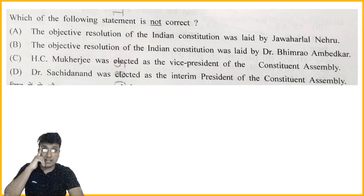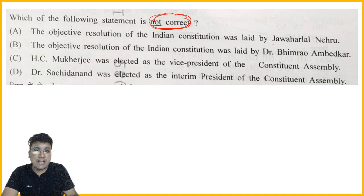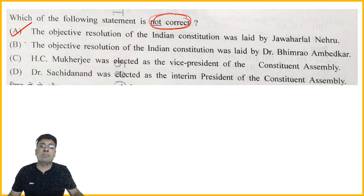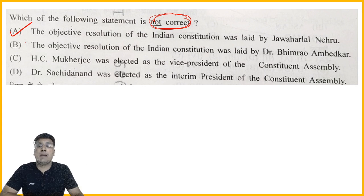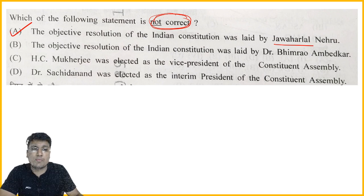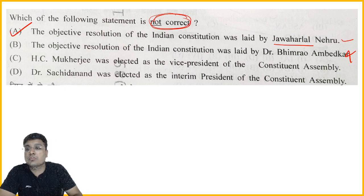Next question: which of the following statements is NOT correct? When the paper comes, put a circle on 'not correct' first. One statement says the Objective Resolution of the Indian Constitution was moved by Jawaharlal Nehru — this is correct. Another says it was moved by Dr. Bhim Rao Ambedkar — this is wrong. So the statement that is 'not correct' is the one attributing the Objective Resolution to Ambedkar. In Haryana Civil Services papers, if you know one particular statement is right or wrong, you can often directly identify the answer. The answer here is Option B.